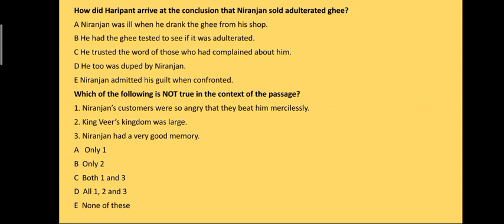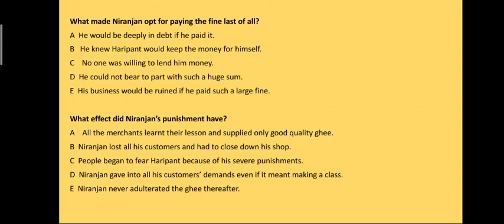Which of the following is not true in the context of the passage? The answer is option E — none of these. What made Niranjan opt for paying the fine last of all? The answer is option D: he could not bear to part with such a huge sum.